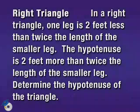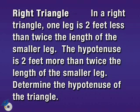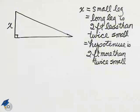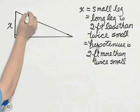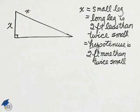In a right triangle, one leg is two feet less than twice the length of the smaller leg. The hypotenuse is two feet more than twice the length of the smaller leg. Determine the hypotenuse of the triangle. The only one they asked us to find was the hypotenuse, so I'll make a star here on the hypotenuse so I don't forget that.